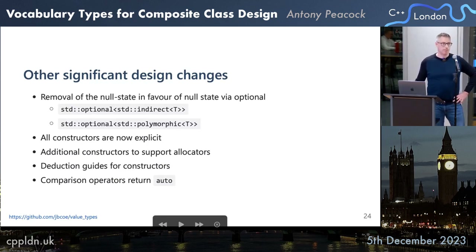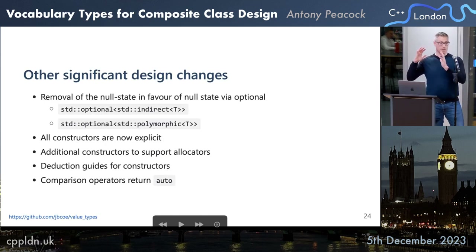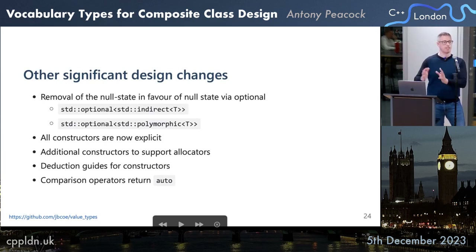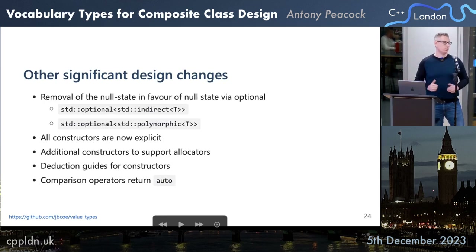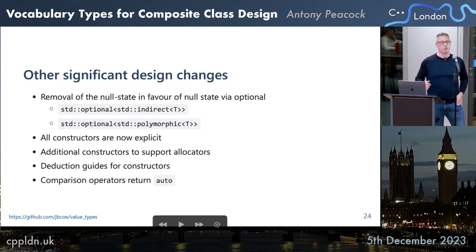Another change from the Library Evolution Working Group is that all constructors should be explicit. Since C++11 you can apply the explicit keyword to any constructor. By requiring explicit, you're saying you want to put indirect there because you're doing memory allocation — we don't want memory allocation happening without you being explicit about it, which is particularly important in generic code where you might inadvertently introduce an allocation.